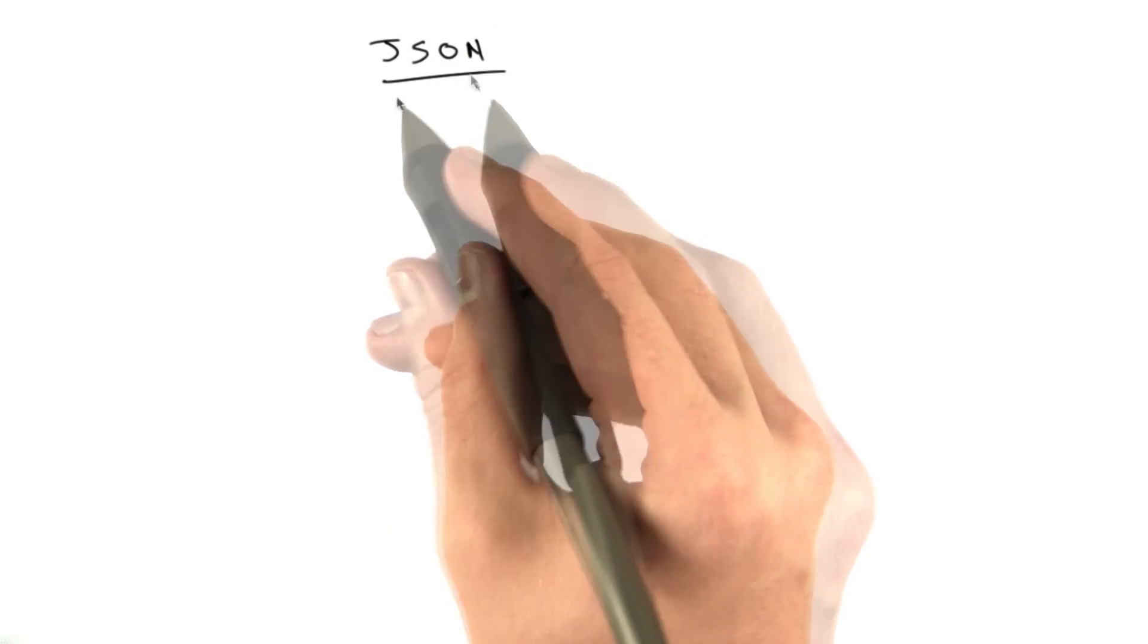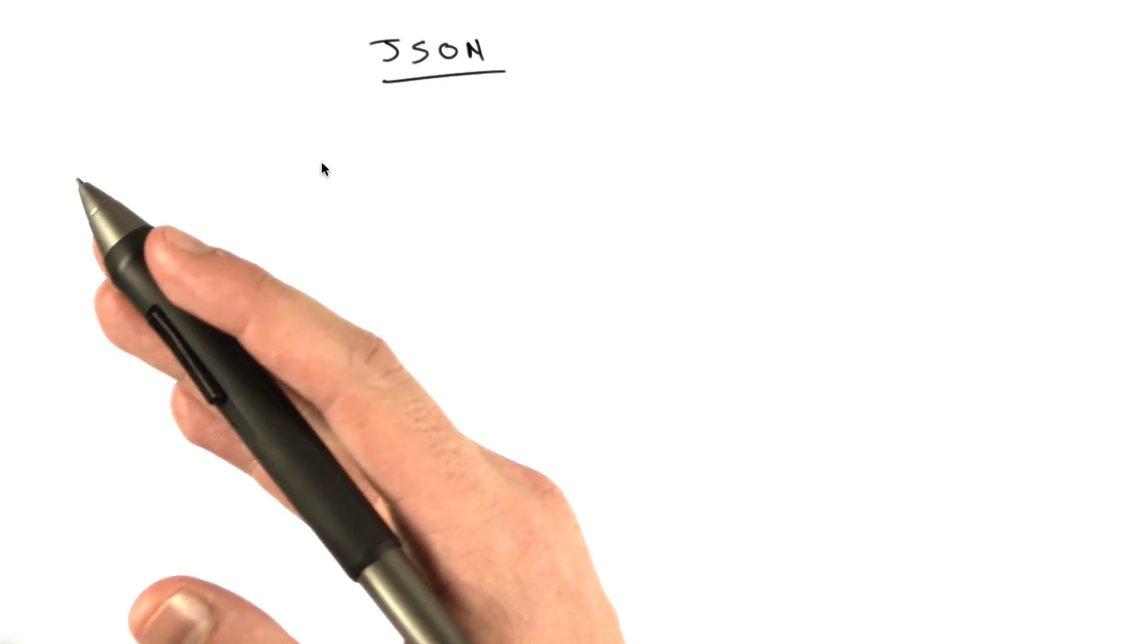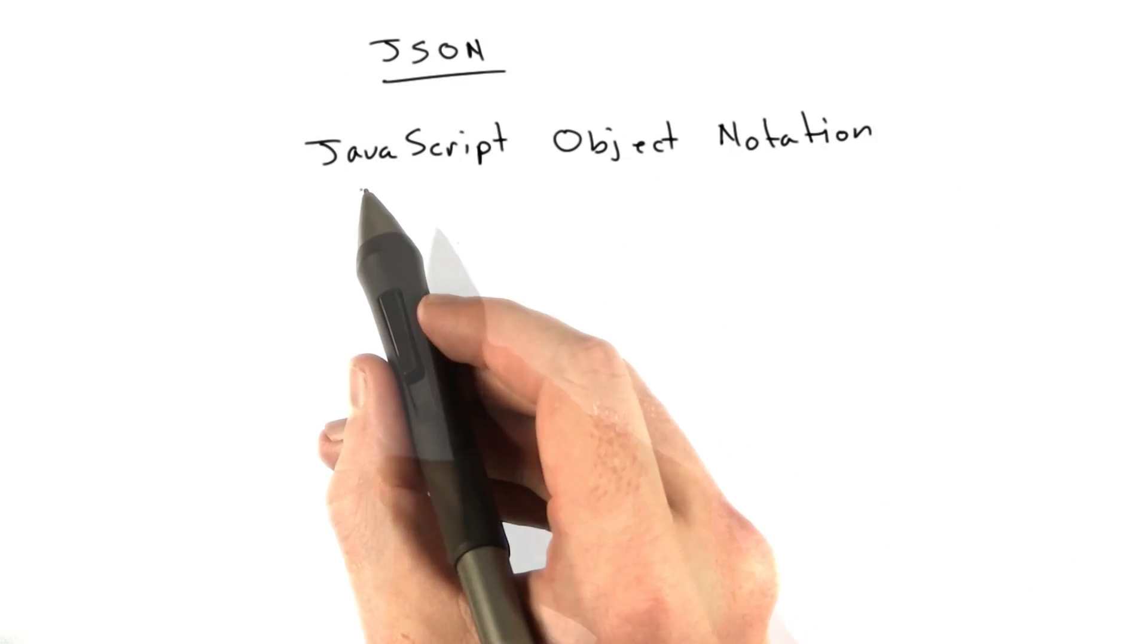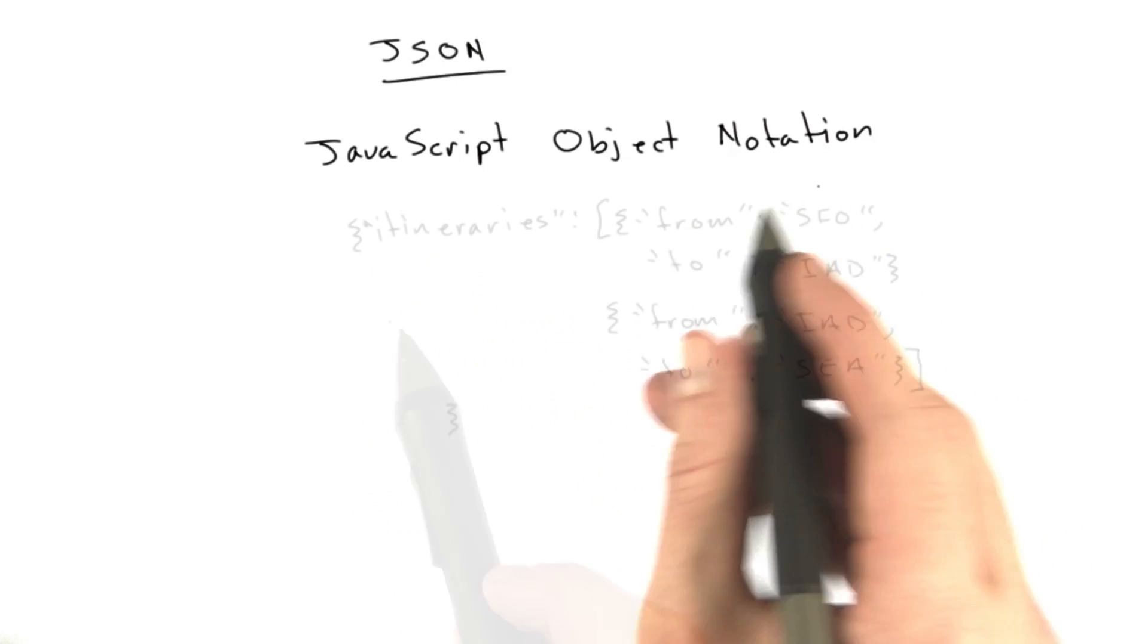The next thing I'd like to talk about is JSON. JSON serves the same purpose as XML, which is a nice, computer and human readable way to exchange data in a consistent format. It stands for JavaScript Object Notation. The reason it says JavaScript is because JSON is actually valid JavaScript code.